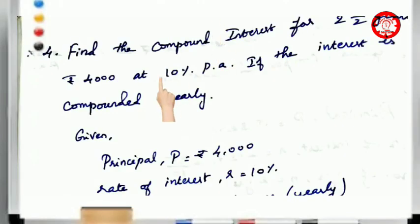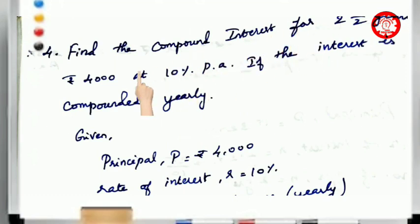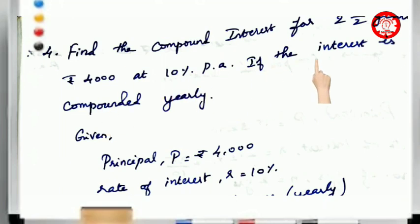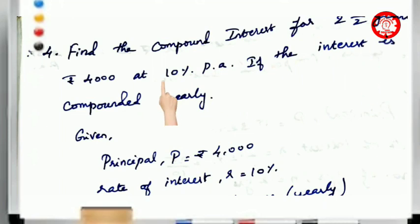Hello students. This is video number eight, standard fourth chapter, exercise 4.3. The problem is to find the compound interest for two and a half years on rupees 4000 at 10% per annum, if the interest is compounded yearly.